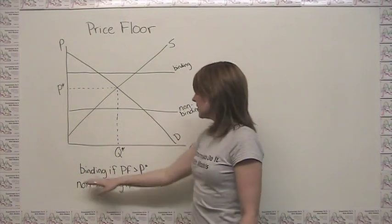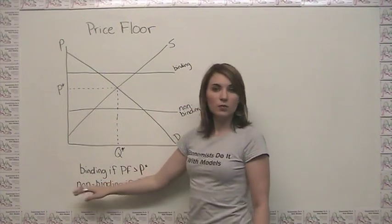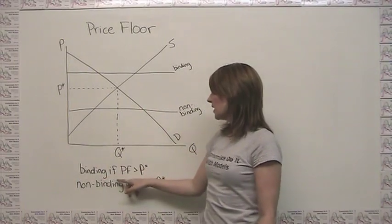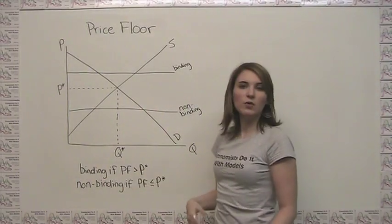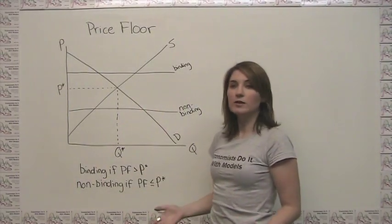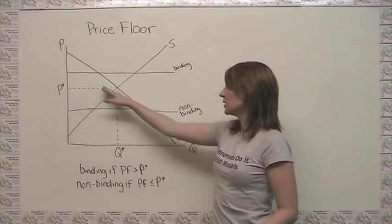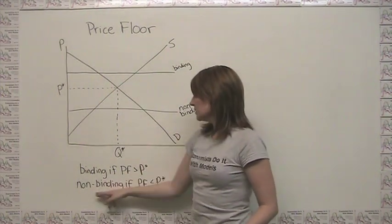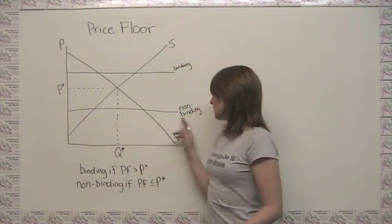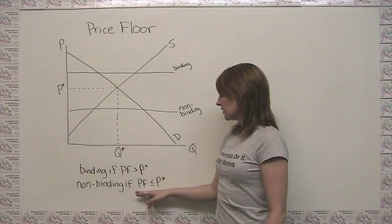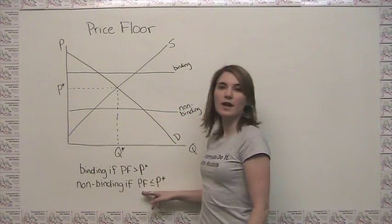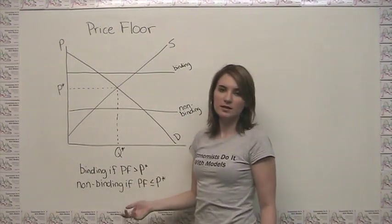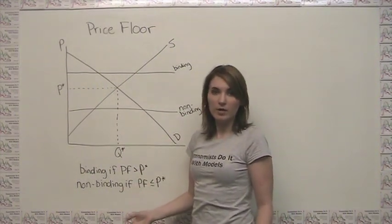We can say in general that a price floor is binding if we set it at a price that is greater than the free market equilibrium price. And a price floor is non-binding if we set it at a price that is less than or equal to the free market equilibrium price.